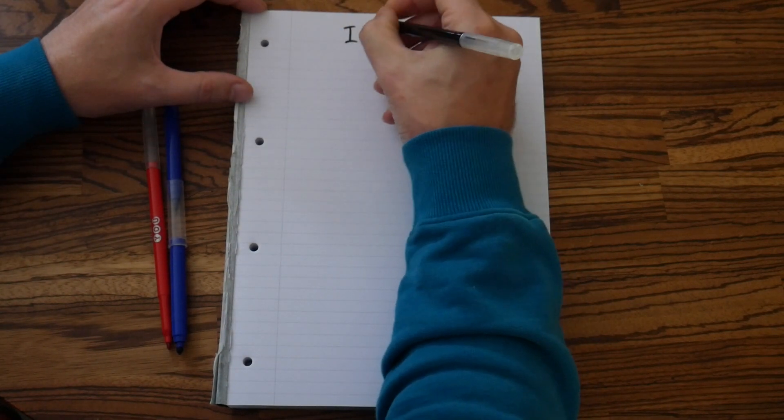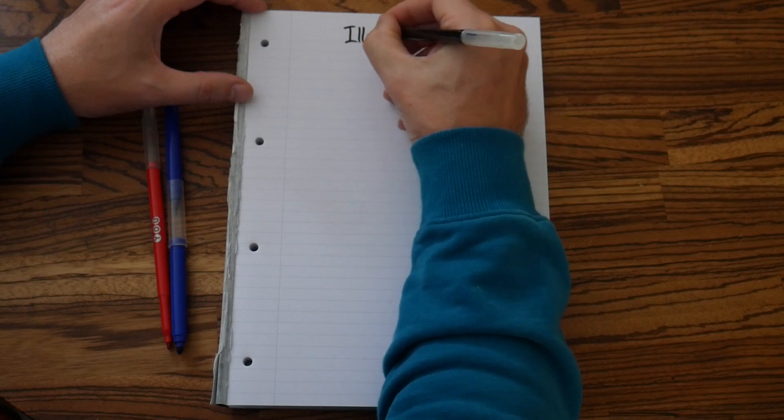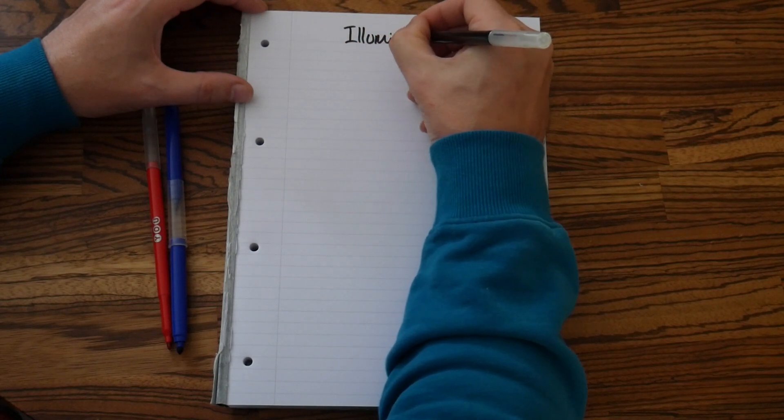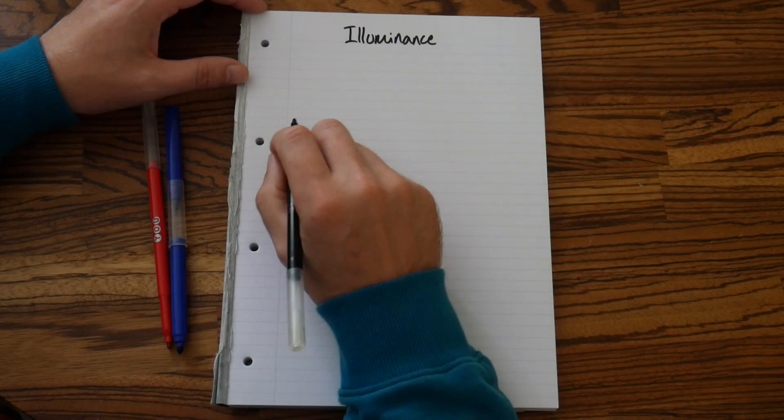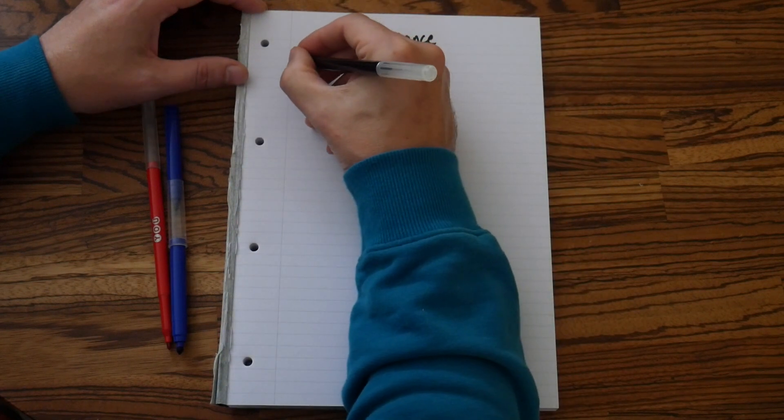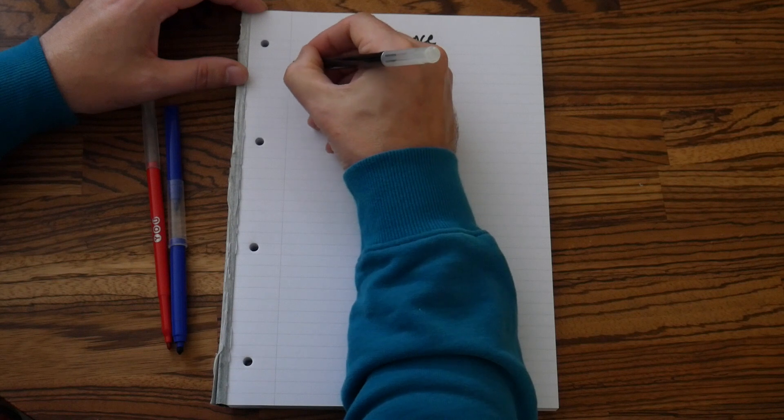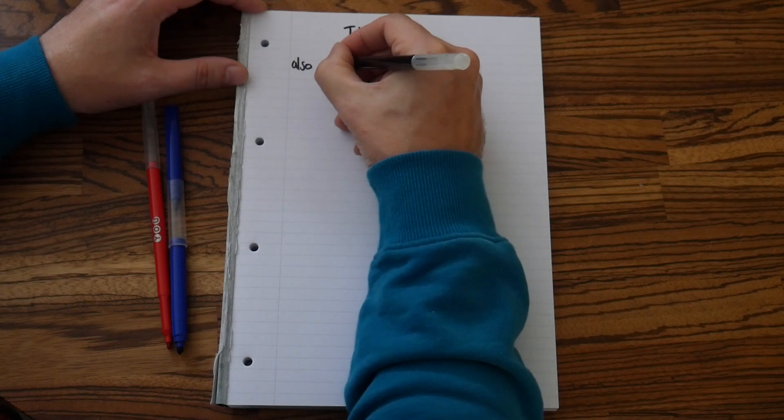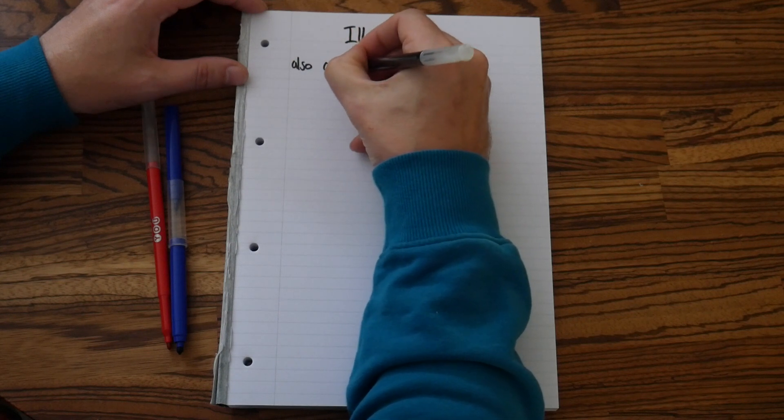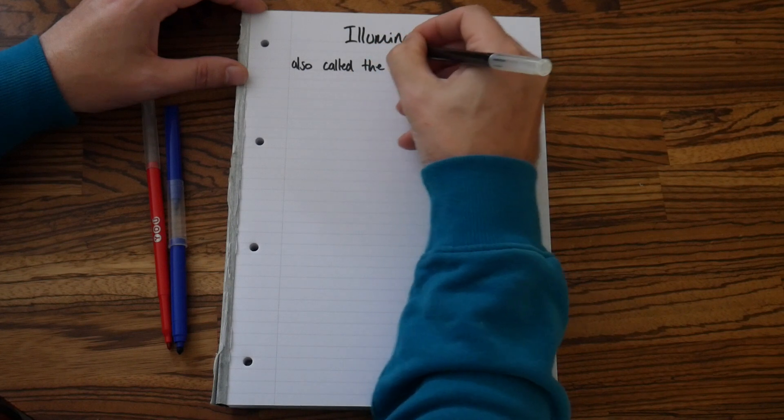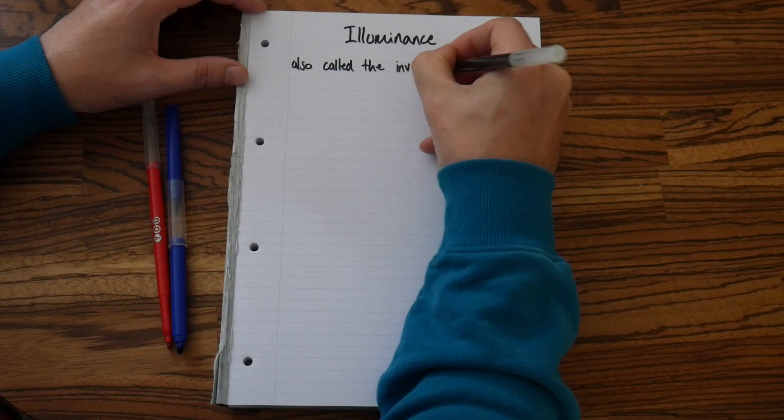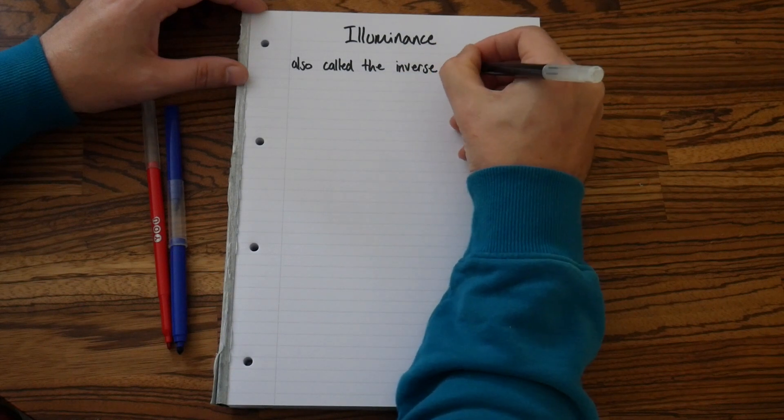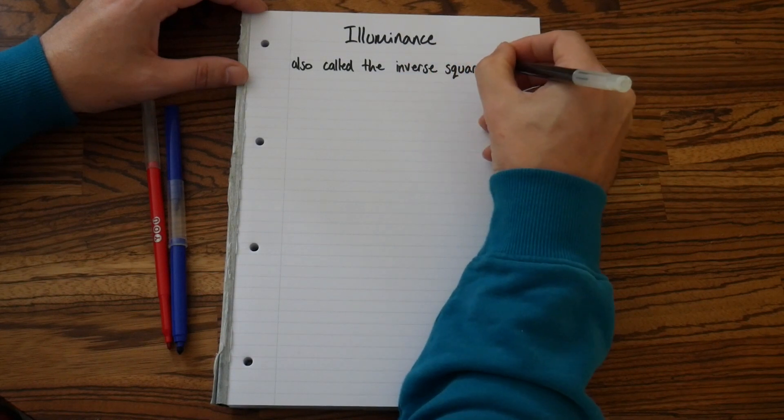For this video, this formula is Illuminance. Now, also write down, also called the inverse square law.